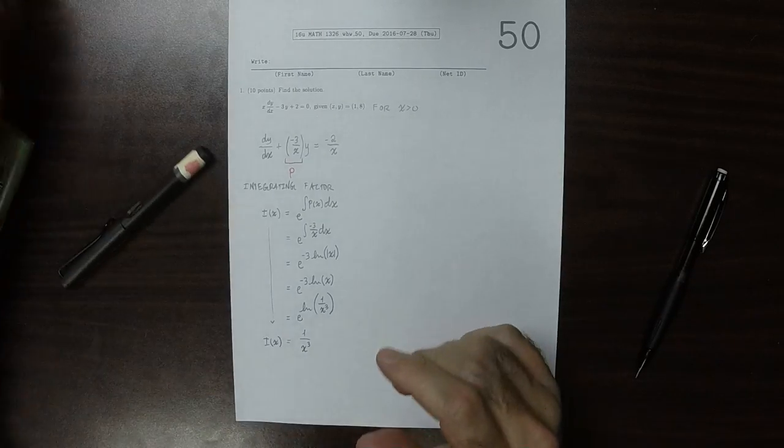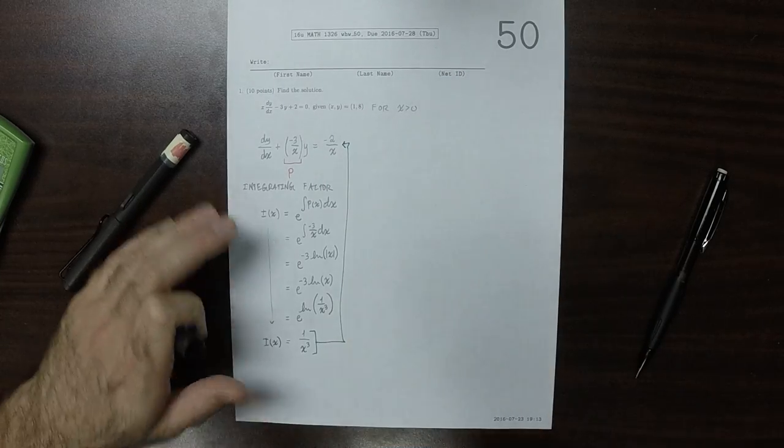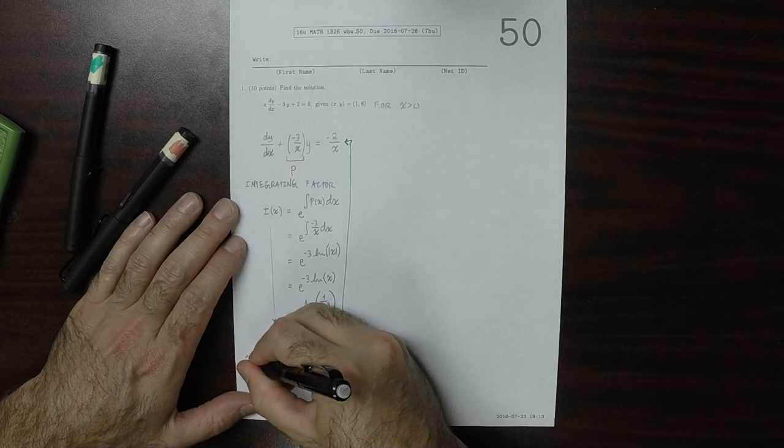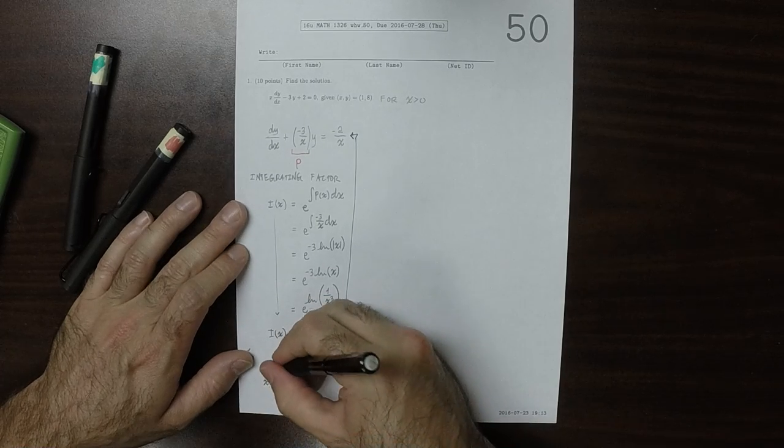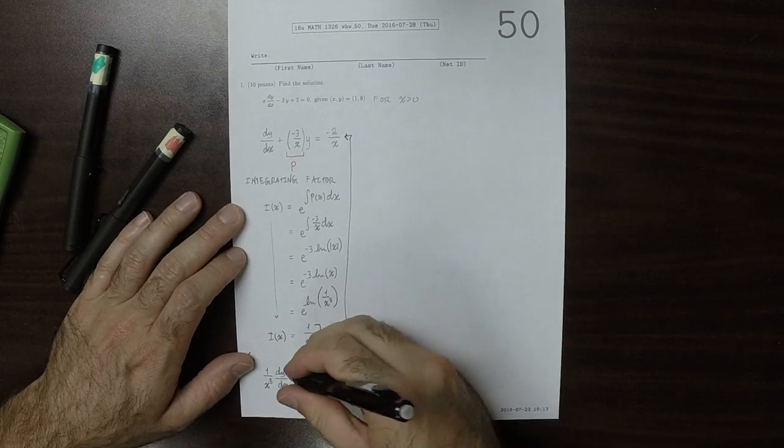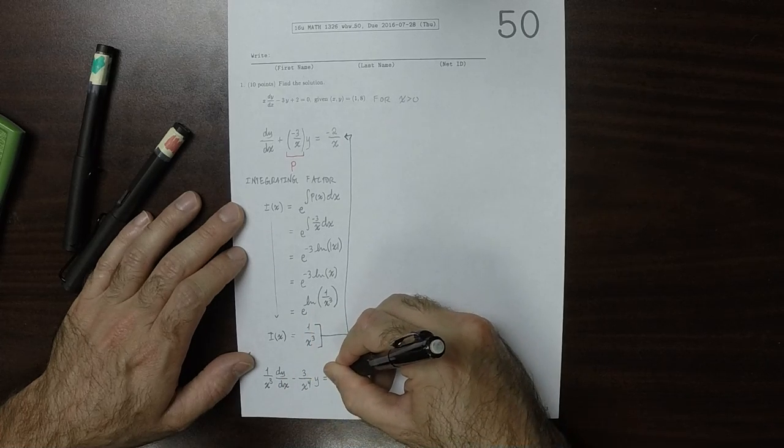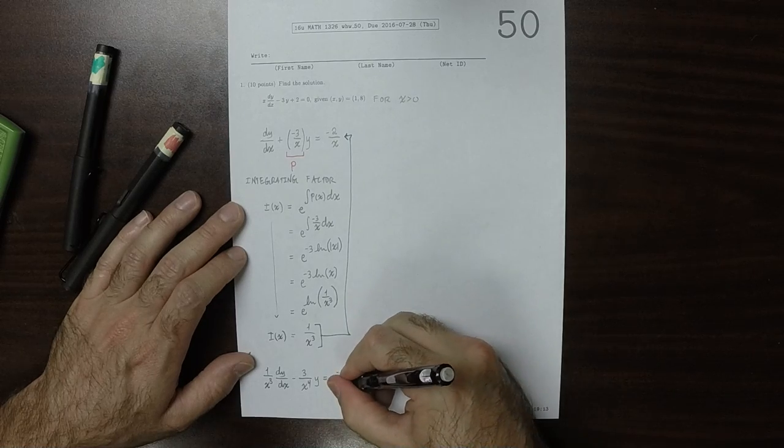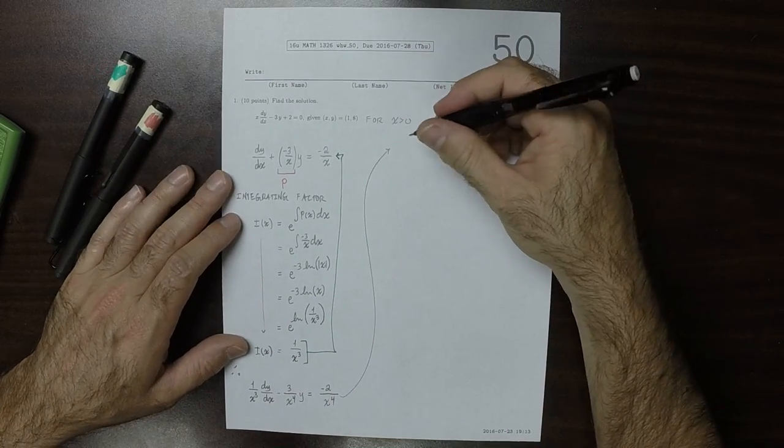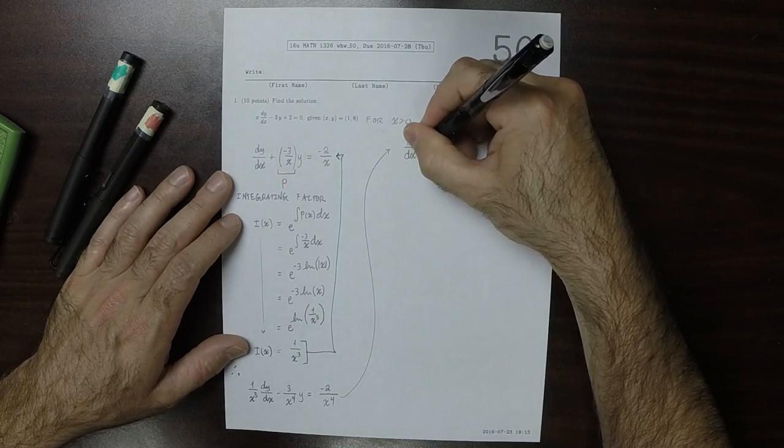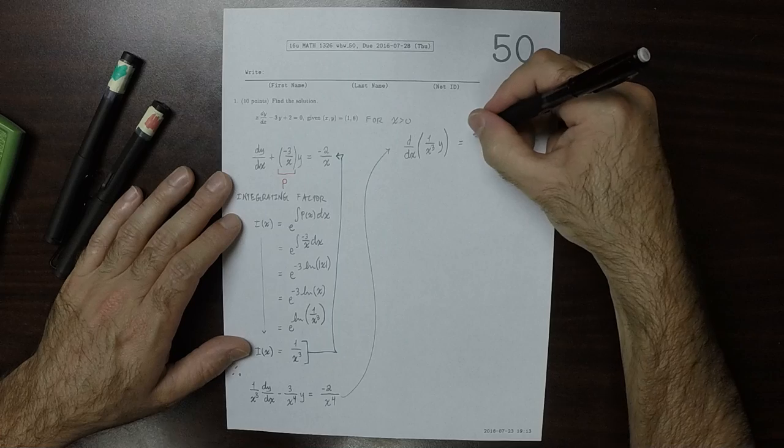We can take this integrating factor and multiply that equation. We get 1 over x cubed dy/dx minus 3 over x to the 4 times y equals negative 2 over x to the 4. The left-hand side is the derivative of this product, 1 over x cubed times y. The right-hand side is just copied.